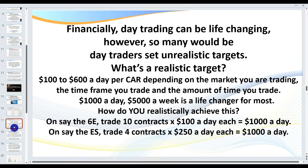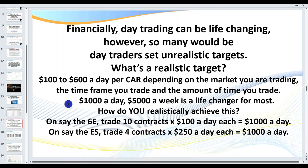Day trading can be very life-changing — and challenging. So many would-be day traders set unrealistic targets. If you're trading the 6A, the 6E, the Euro, the ES, or oil — anywhere from $100 to $600 per contract per day is realistic, depending on the market and time you're actually trading. We know that $1,000 a day or $5,000 a week will be a life-changer for most people. If you're trading the 6E, you can trade 10 contracts at $100 a day each. If you're trading the ES, you could trade four contracts at $250 a day — with approximately the same capital requirements.